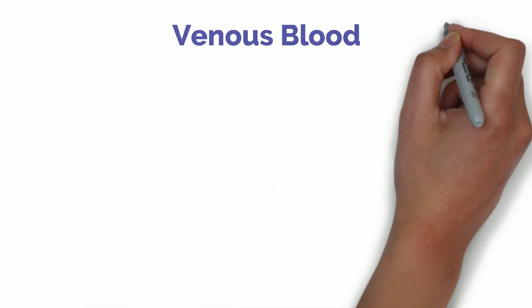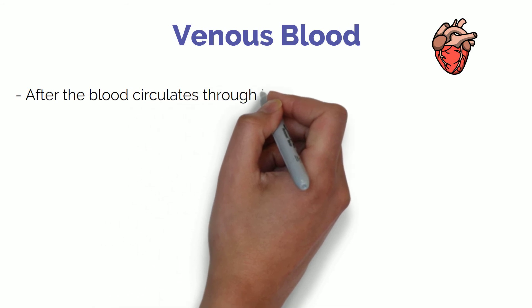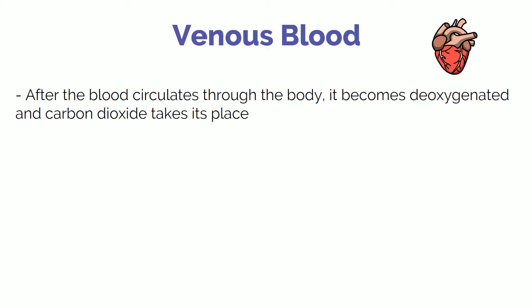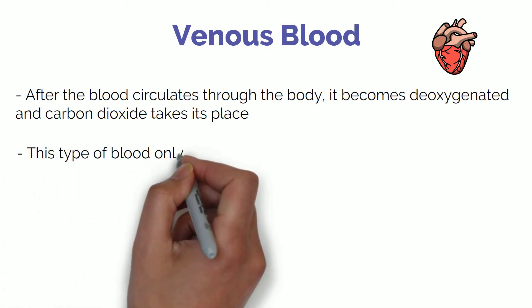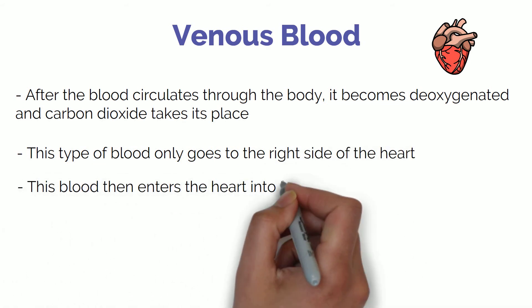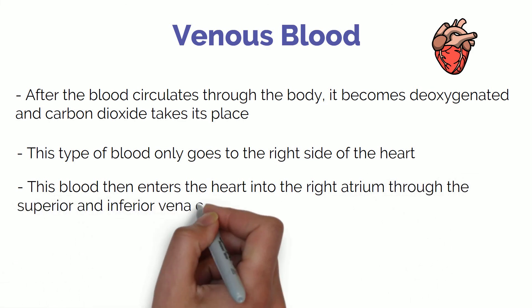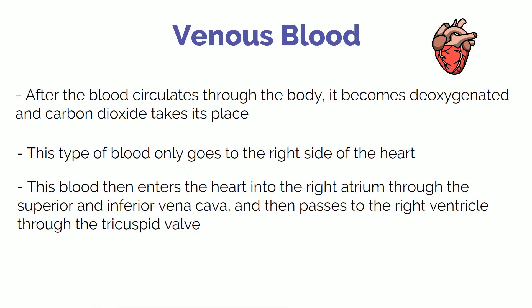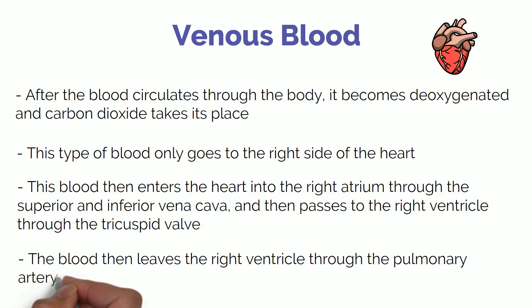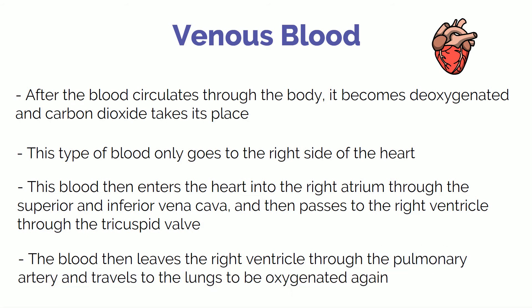After the blood circulates through the body, it becomes deoxygenated and is called venous blood. This is because the oxygen is distributed through the body and carbon dioxide takes its place, so you can think of this type of blood as dirty. This dirty blood only goes to the right side of the heart. It enters the heart into the right atrium through the superior and inferior vena cava, and then passes to the right ventricle through the tricuspid valve. From there, the blood leaves the right ventricle through the pulmonary artery and travels to the lungs to be oxygenated again, restarting the whole cycle.